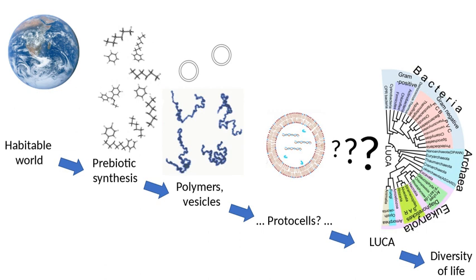Studies reported in 2008 based on isotopic ratios of organic compounds found in the Murchison meteorite — carbon-12 and carbon-13 — suggested that the RNA component uracil and related molecules were formed extraterrestrially. On August 8, 2011, a report based on NASA studies with meteorites found on Earth was published suggesting DNA components adenine, guanine, and related organic molecules were made in outer space. More recently, scientists found that cosmic dust permeating the universe contains complex organic matter that could be created naturally and rapidly by stars.